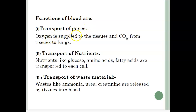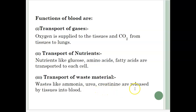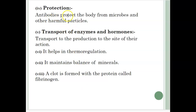Functions of blood: first, transport of gases — oxygen is supplied to the tissues and carbon dioxide from the tissues to lungs. Transport of nutrients — nutrients like glucose, amino acids and fatty acids are transported to each cell. Transport of waste materials — wastes like ammonia, urea and creatinine are released by tissues into blood. Protection — antibodies protect the body from microbes and other harmful particles. Transport of enzymes and hormones to the site of action. It helps in thermoregulation. It maintains balance of minerals. A clot is formed with the protein called fibrinogen.